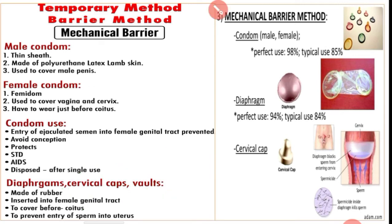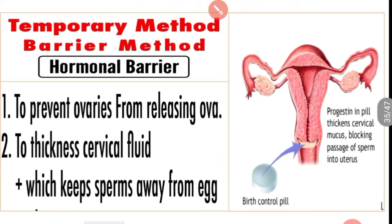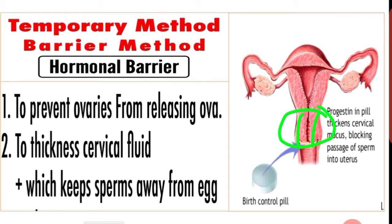Next, under temporary method — barrier method — we are going to see about hormonal barrier. The hormonal barrier prevents the ovaries from releasing ova, and thickens the cervical fluid, which keeps the sperm away from the egg. That is the main usage of hormonal barrier.